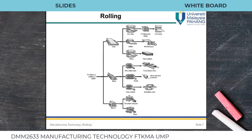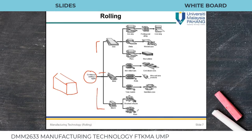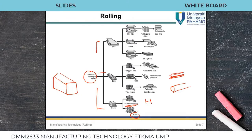First we have an ingot — a very large size shape obtained after the casting process. Then we make slab, billet, or bloom. Bloom can be used to make rails and structural shapes like I-section beams. Billet can be used to create pipes, solid rods, fibers, and thin wires. With slabs we can create plates, large welded pipes, or cold strips.